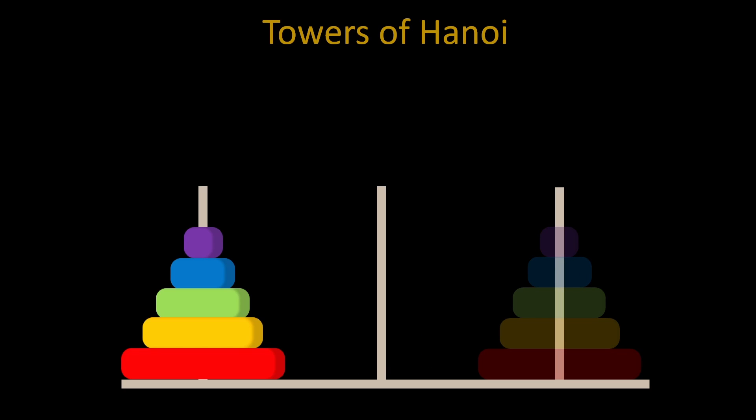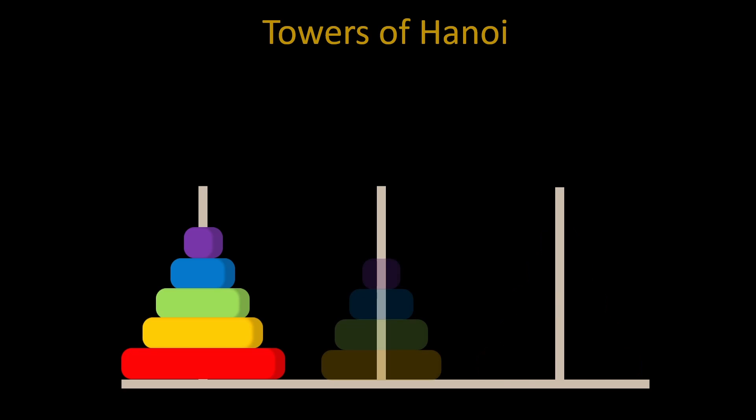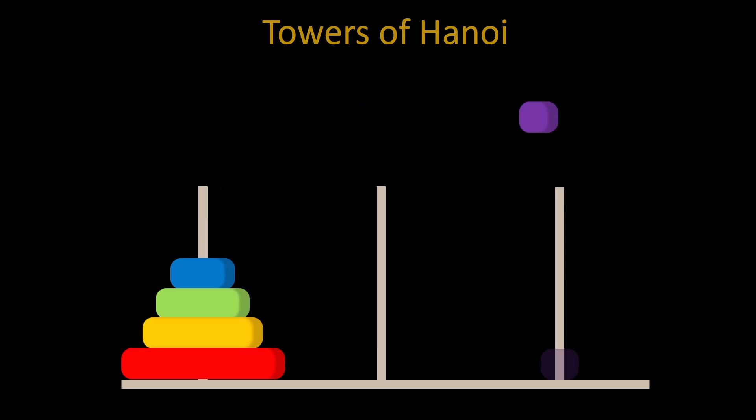To solve any Tower of Hanoi problem, we simply need to solve the variation of that problem with one fewer starting discs. And this line of thinking can cascade all the way down until the only disc we need to move is the topmost one.